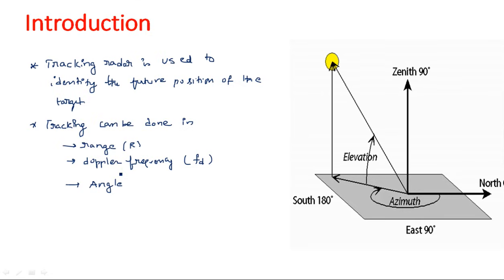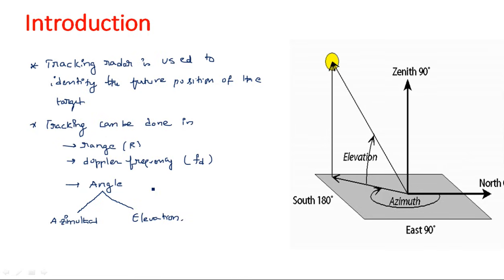Angle means angular — specifically azimuthal angle and elevation angle. So there are actually four different factors used to identify the future position of the target: range, Doppler frequency, azimuthal angle, and elevation angle. Using any one of these factors or a combination of them, we can identify the future position of the target.